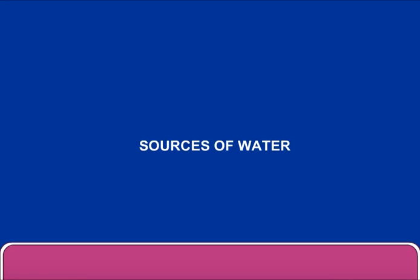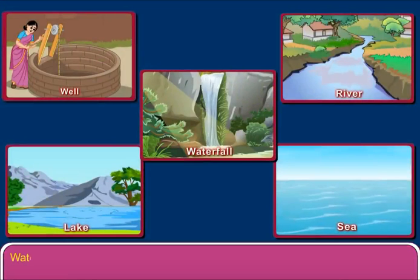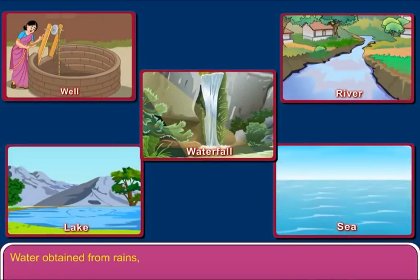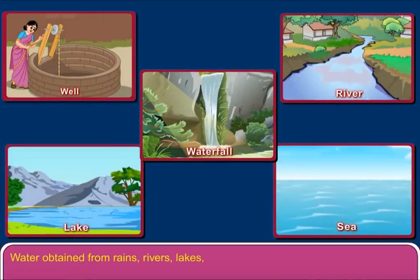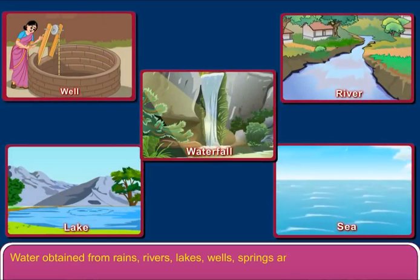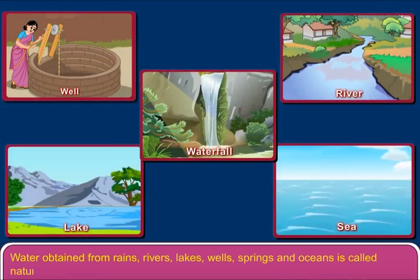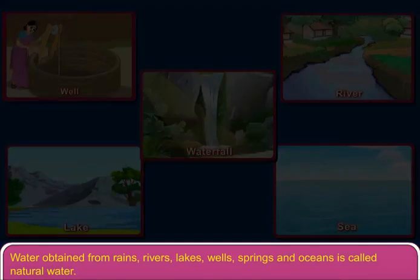Sources of Water. Water obtained from rains, rivers, lakes, wells, springs and oceans is called natural water.